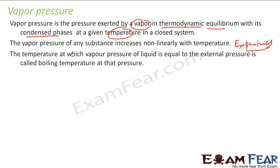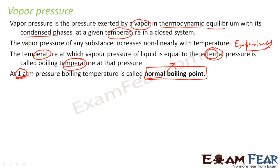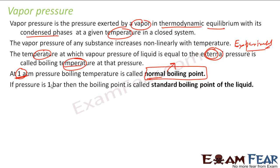The temperature at which the vapor pressure of a liquid equals the external pressure is called the boiling point. So if my vapor pressure equals the external pressure, the liquid will start boiling. At one atmospheric pressure, the boiling point is called the normal boiling point — for water, that is 100 degrees Celsius. If the external pressure is one bar instead of one atmosphere, that boiling point is called the standard boiling point.